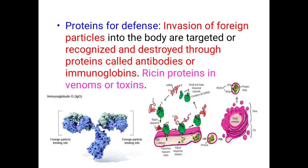Proteins are also used for the defense system. Entry of any foreign particles into the body system are targeted, identified, and destroyed by special proteins called antibodies or immunoglobulins. These immunoglobulins are chemically made up of proteins. Similarly, resin proteins are present in the venoms and toxins produced by living organisms.